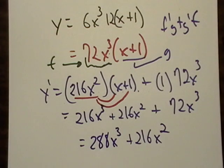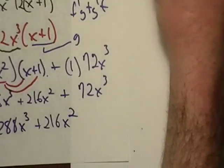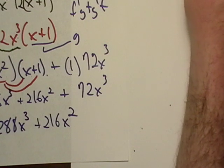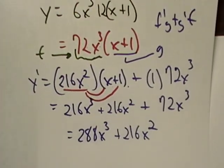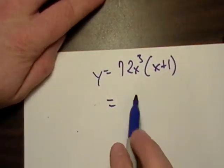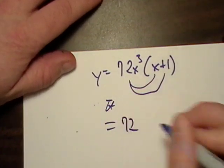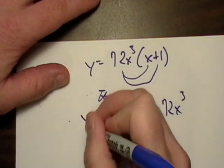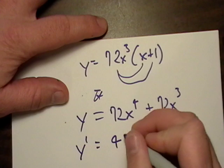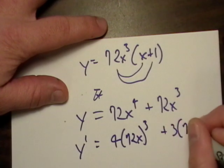Maybe I can factor it but really not a big deal. So now I got that. Let's take this and let's see if this checks out. I hope it does. Let's see if this checks out if we just use it the old-fashioned way. So if we distribute the 72x cubed in there, what do we end up with? We end up with 72 x to the fourth plus 72 x to the third. So y prime is going to equal 4 times 72 x to the third plus 3 times 72 x squared.